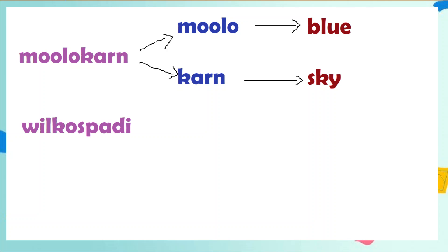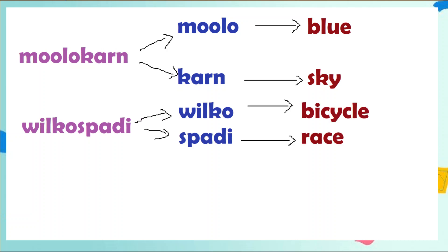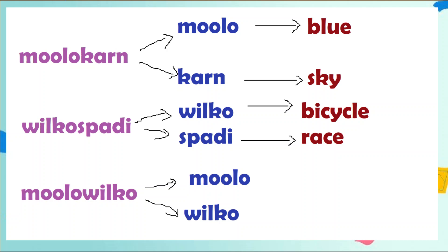The next word is Vilkospadi, which means bicycle race. We will divide this into two parts — Vilko and Spadi. Vilko means bicycle and Spadi means race. And the last is Molok Vilko, which means blue bicycle — divided into Molok and Vilko.